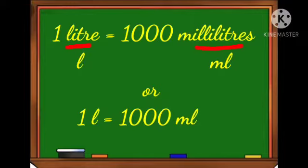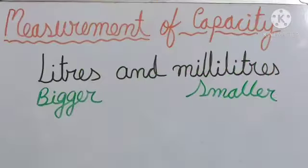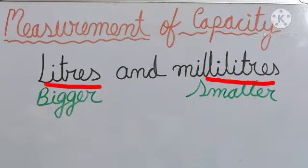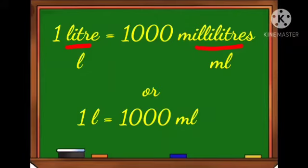Liter we can write as L and milliliter we can write as mL. In short form, we can write 1 liter is equal to 1000 milliliters. Recap: liters and milliliters are standard units to measure the capacity, and 1 liter is equal to 1000 milliliters.